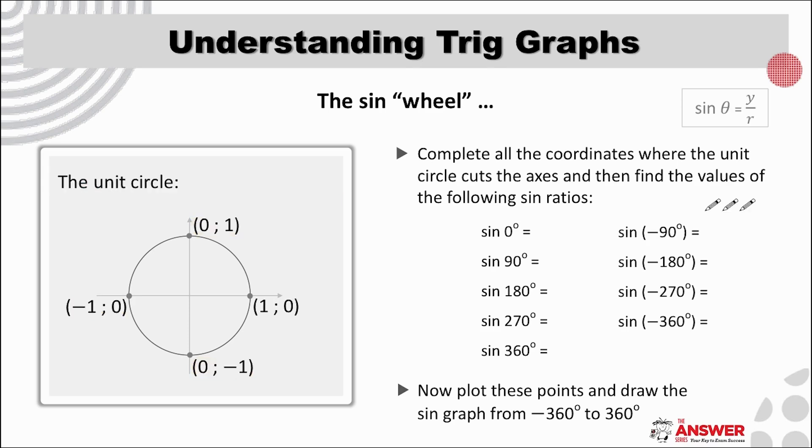Okay, great. Let's double check first that you have the correct coordinates in place. On the x-axis y is 0 and x is 1 and minus 1. And then on the y-axis x is 0 and y is 1 and minus 1. And now using the relevant coordinates of these points, go ahead and find the values of all these sine ratios working with the definition language of x, y and r.